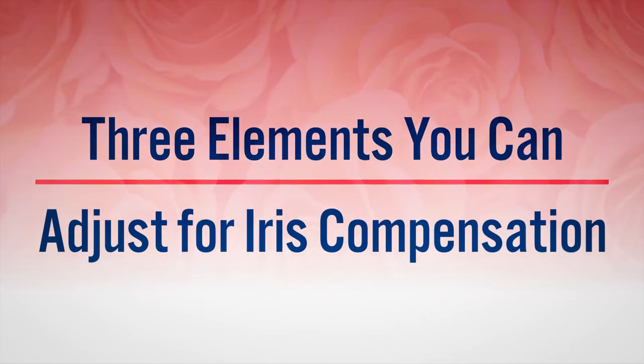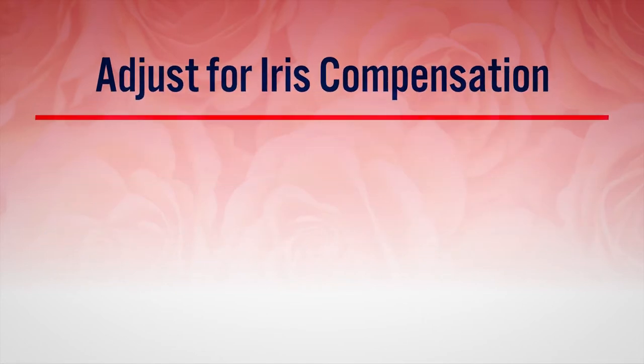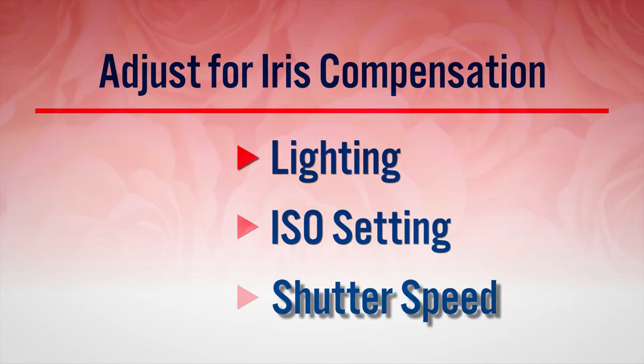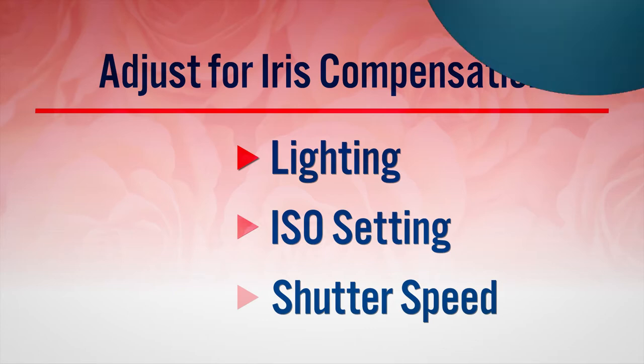These dramatic changes in depth of field are achieved by changing the iris setting. However, changing the iris setting is not something you do arbitrarily because it directly changes the image exposure. Getting proper image exposure is absolutely critical when capturing both video and still images. There are three elements you can adjust to compensate for changes you make in the iris and still achieve proper exposure: lighting, ISO setting, and shutter speed. Each has its advantages and disadvantages and can affect the look of the final image, so it's important to consider these effects when deciding which technique to use.